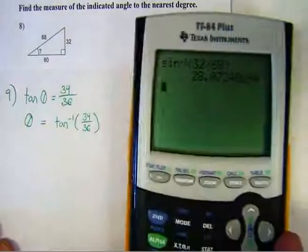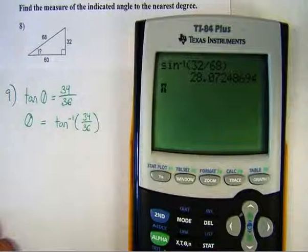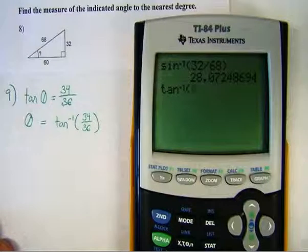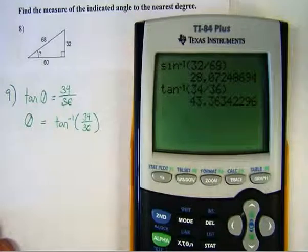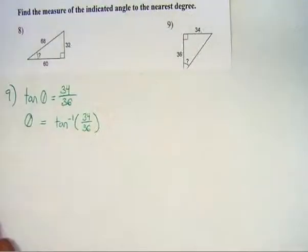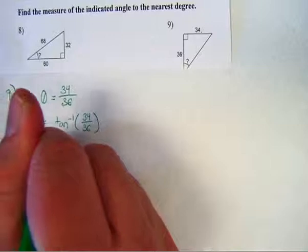Now I actually need to make that calculation. So I'll say the inverse tangent of 34 divided by 36. And I'm trying to round this to the nearest degree. So that would be 43. So that would be 43 degrees.